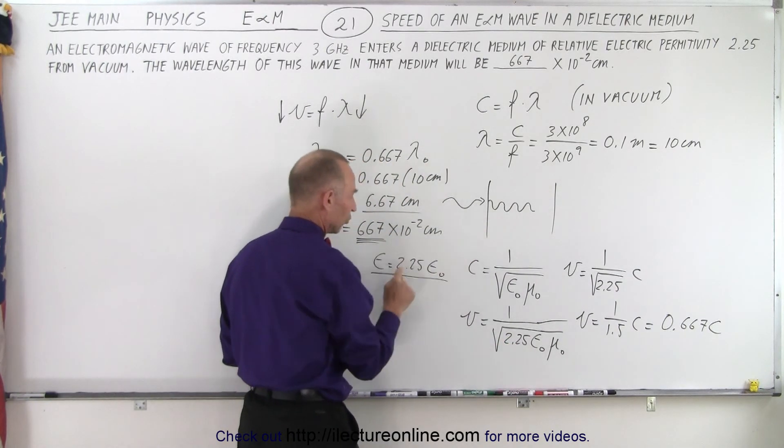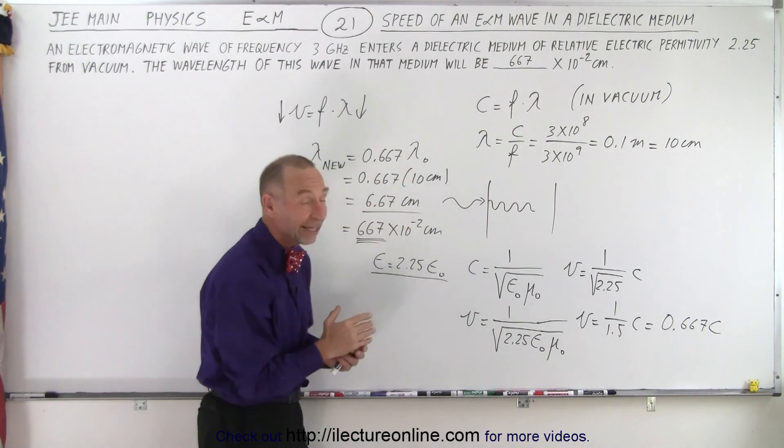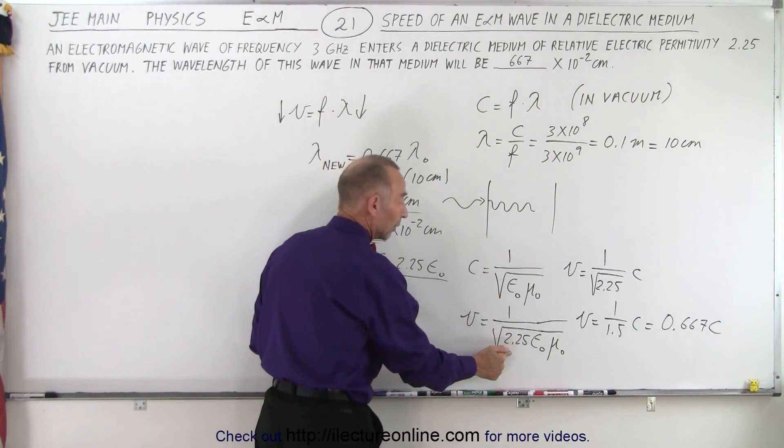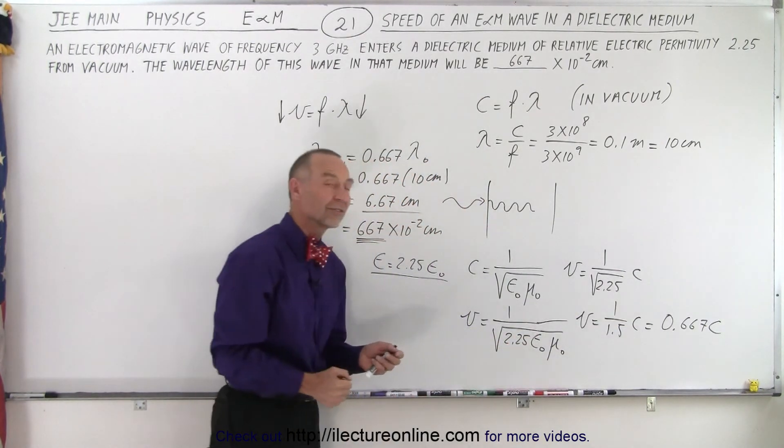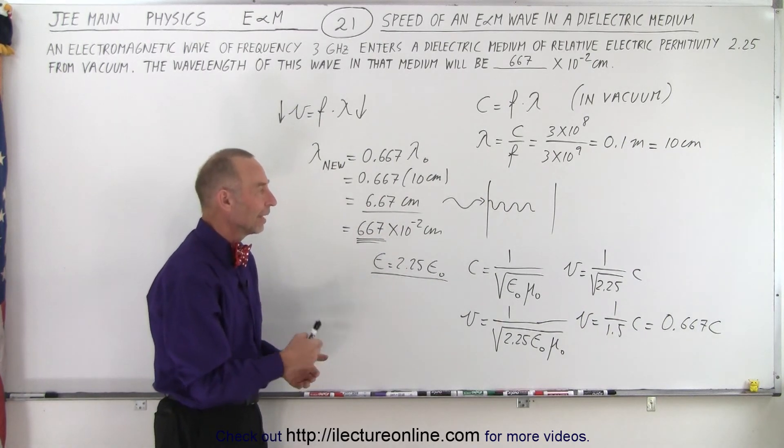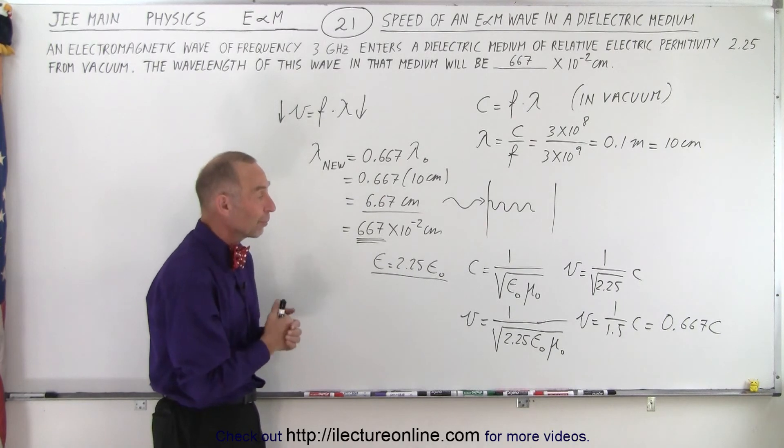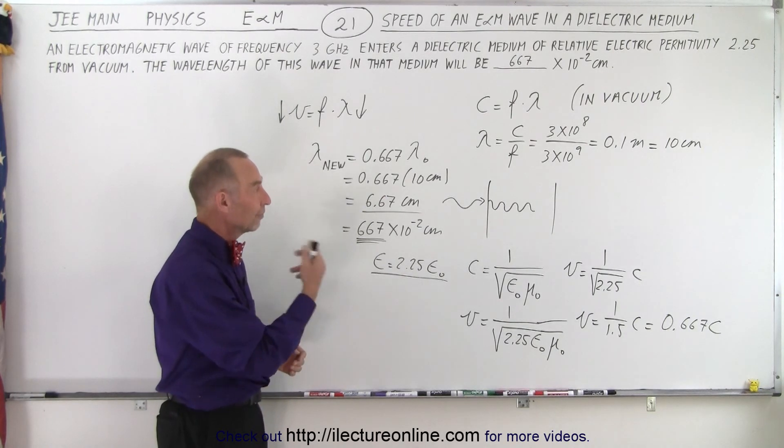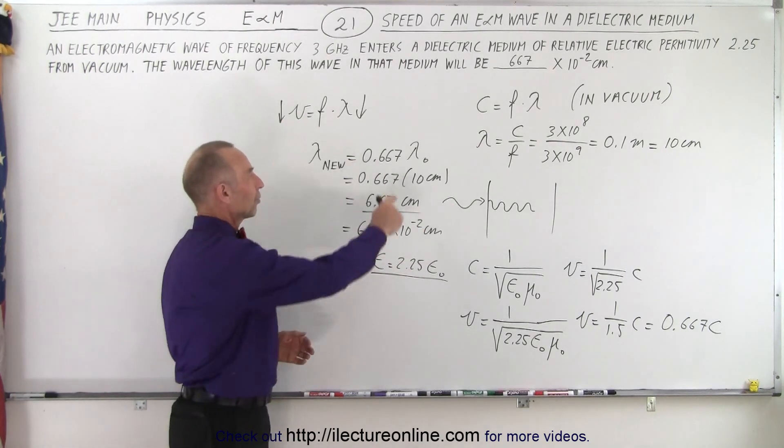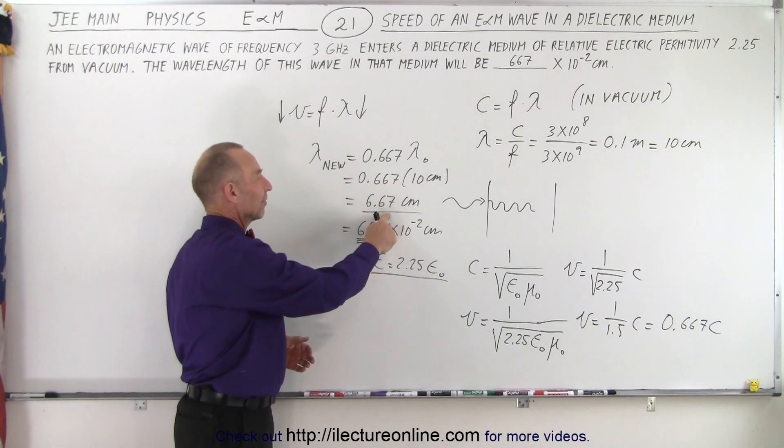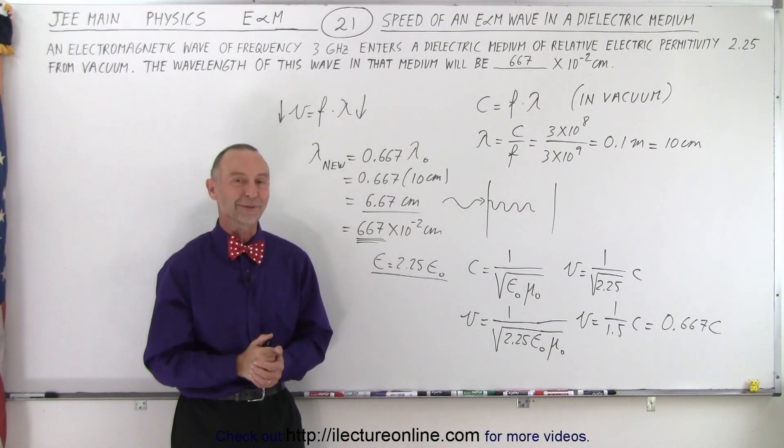The electric permittivity in a vacuum, 1 over the square root of 2.25 is the same as 1 over 1.5. So we have 0.667 times the speed of light as the speed in the dielectric and therefore also 66.7 percent of the wavelength if the wavelength was in air or of course in vacuum. And so that's where we get the 6.67 centimeters converted to the proper format for the answer. And that is how it's done.